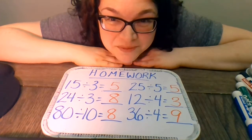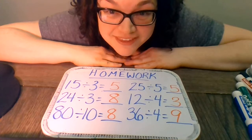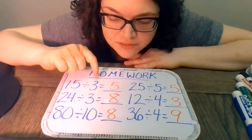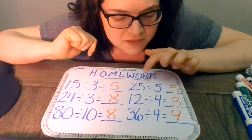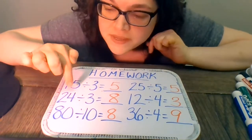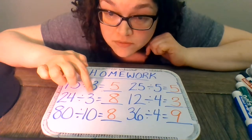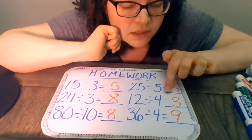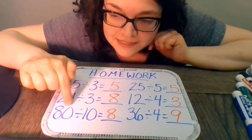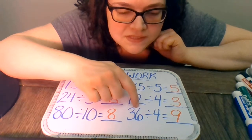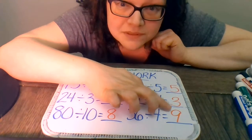Hello, grade threes. Welcome to math today. So here are the answers to your homework questions. 15 divided by 3 equals 5. 25 divided by 5 equals 5. 24 divided by 3 equals 8. 12 divided by 4 equals 3. 80 divided by 10 equals 8. And 36 divided by 4 equals 9.